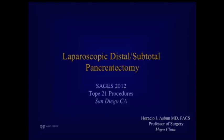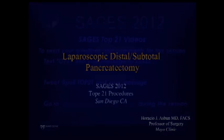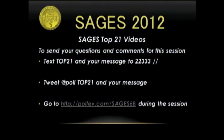If you look at the bottom of the page in your program or the online version, there is a way to text, tweet, or email questions to us up here at the podium. The number is 22333 — text 'Top 21' and the question you'd like to submit. If we don't get to your question because of the number of questions submitted, we apologize upfront, but we'll get to as many as we can within the time constraints.